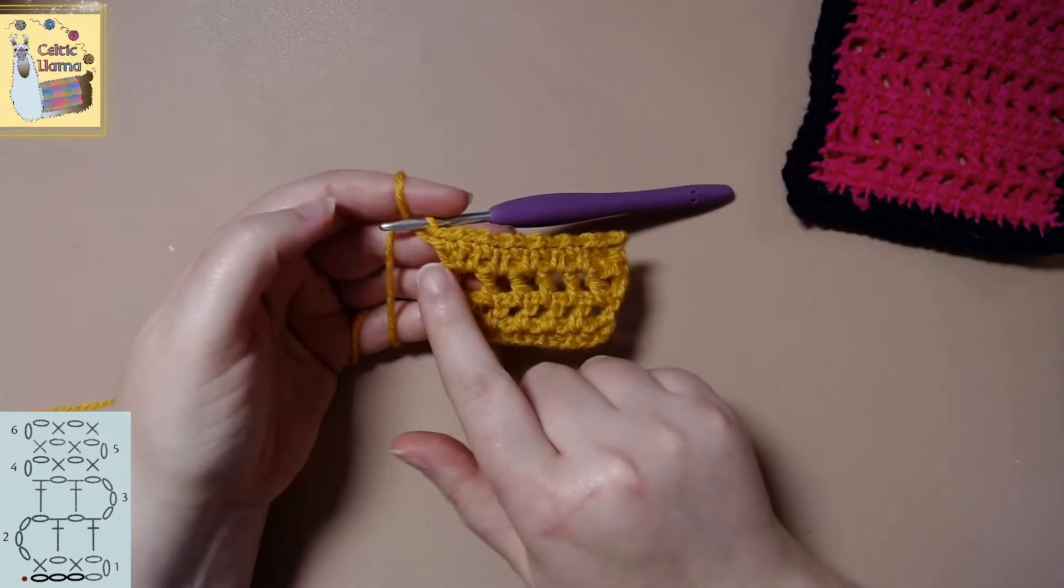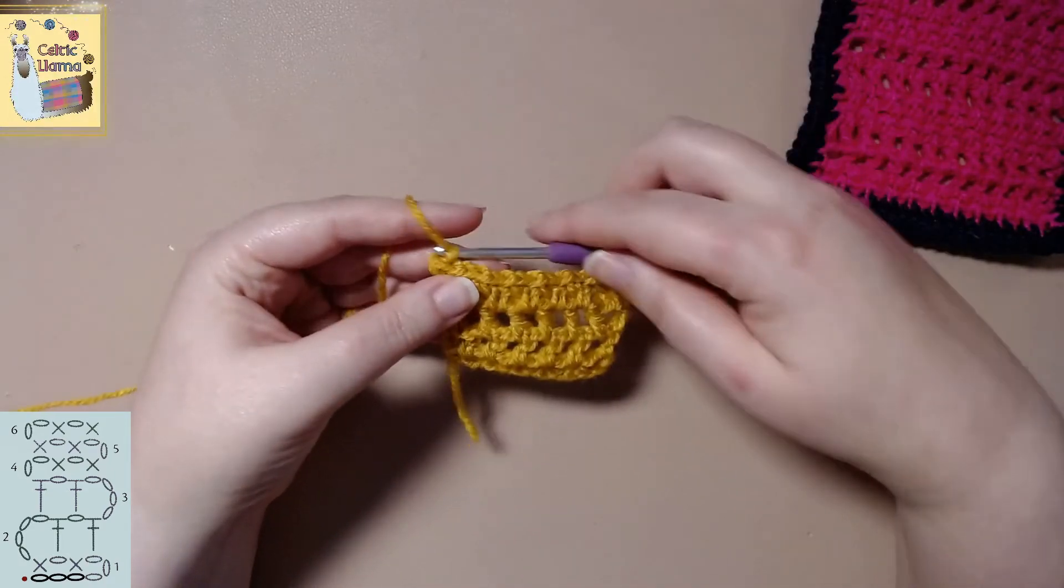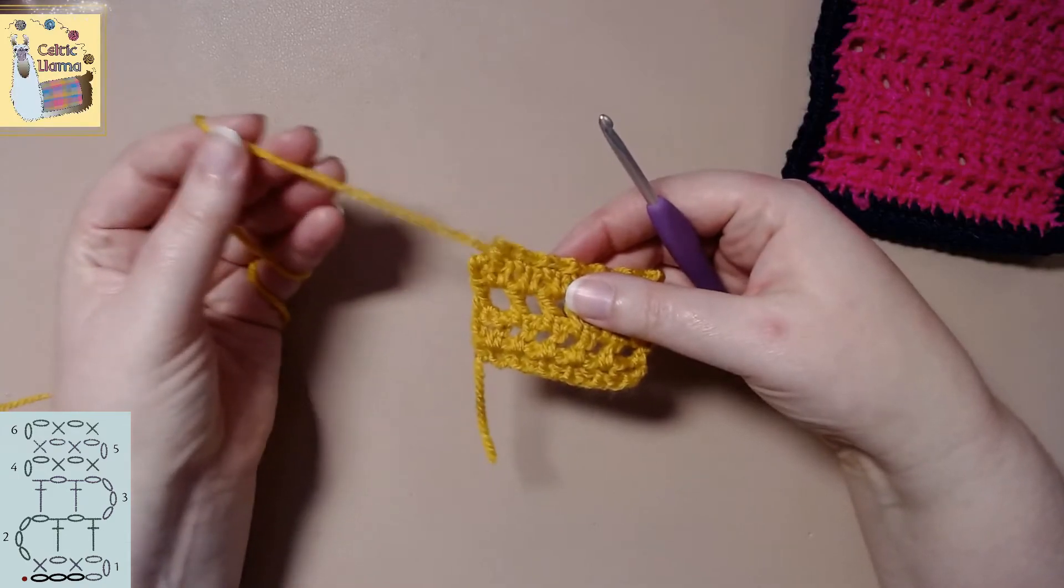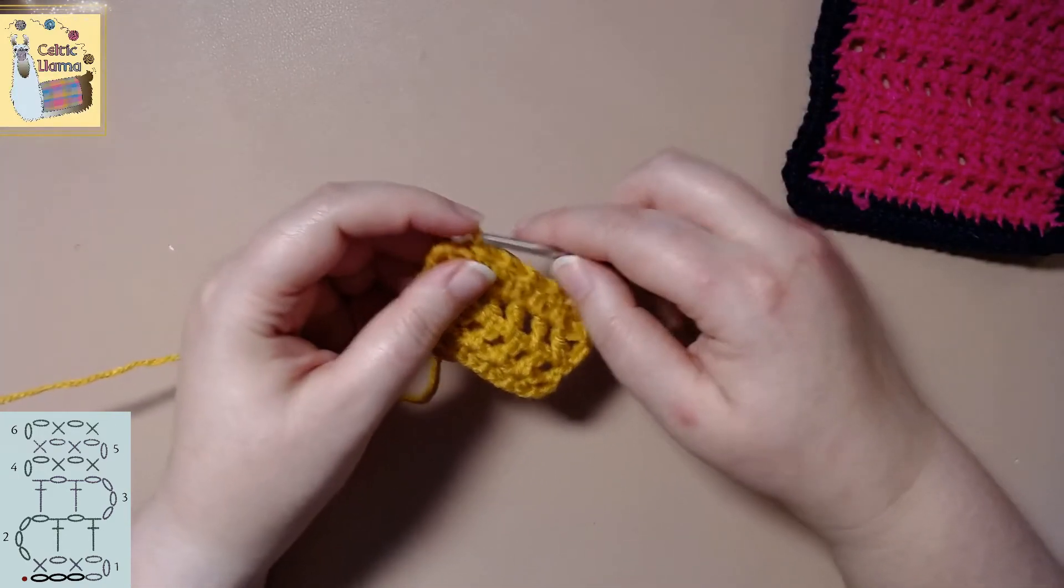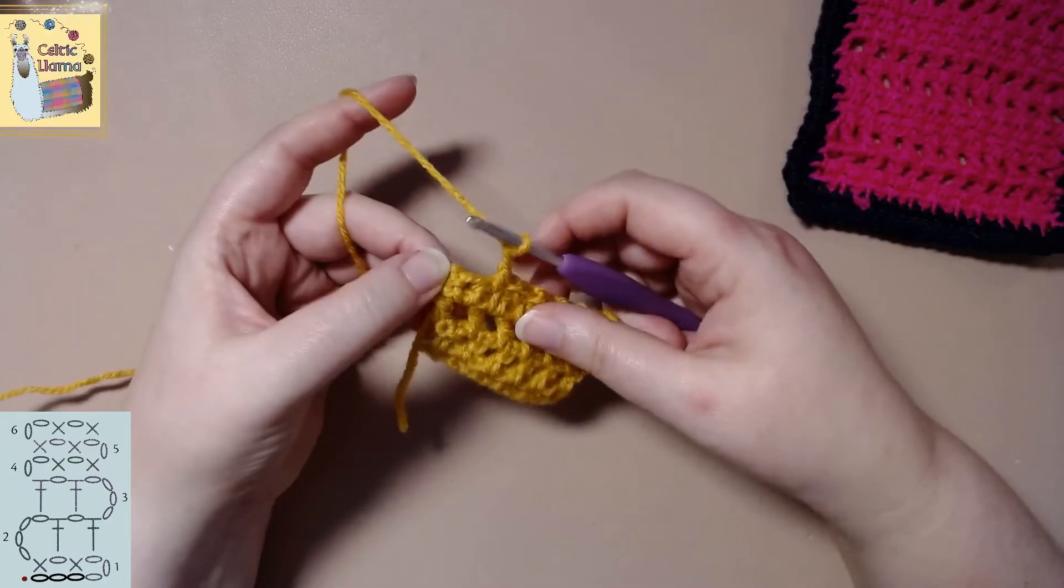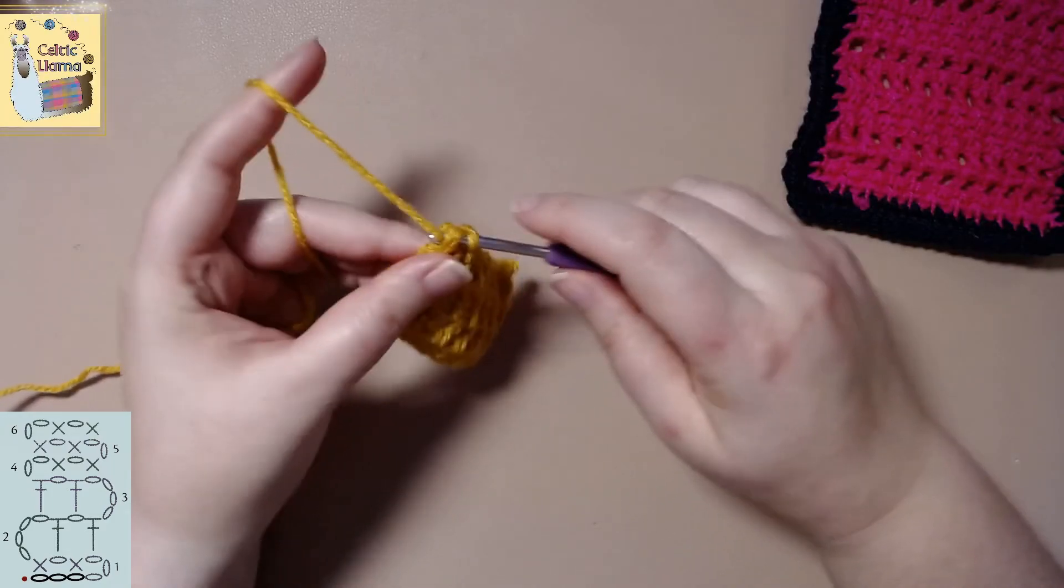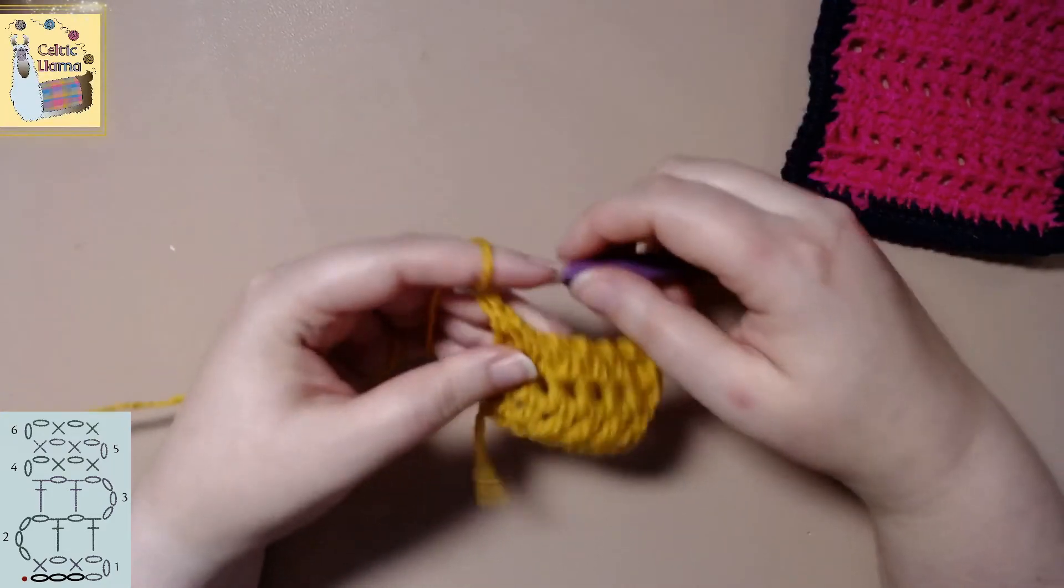All right. Coming along. Now you can see right here, I did it purposefully wrong. So you can see that what happens if you end up losing count of your squares, it ends up making your work poke out and it'll end up growing on the sides and then we'll have an uneven project.